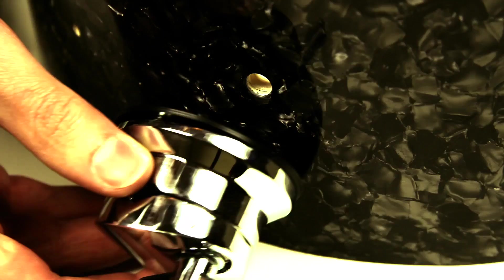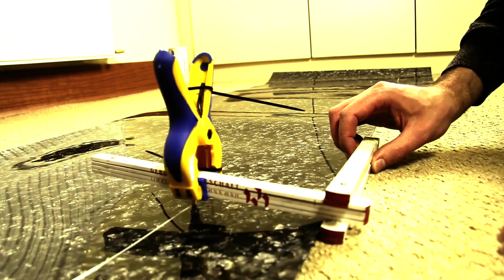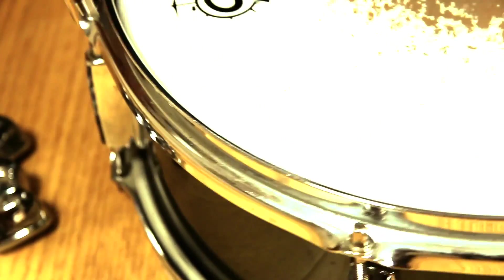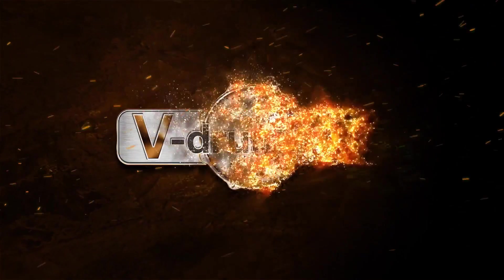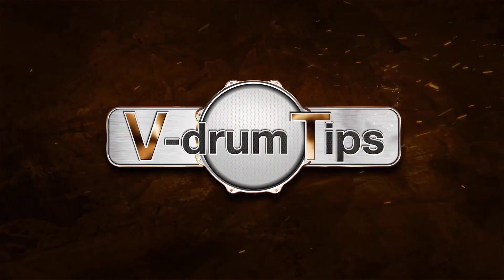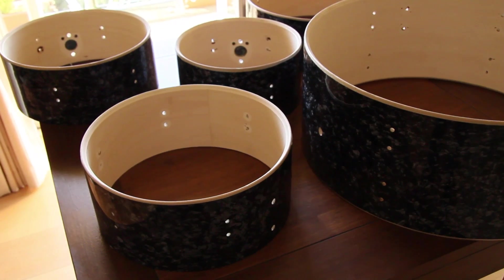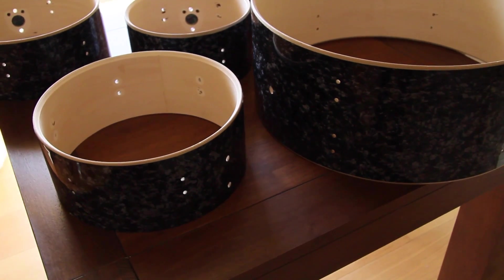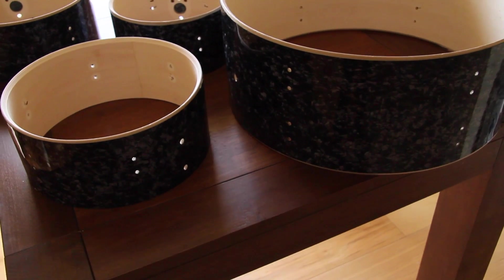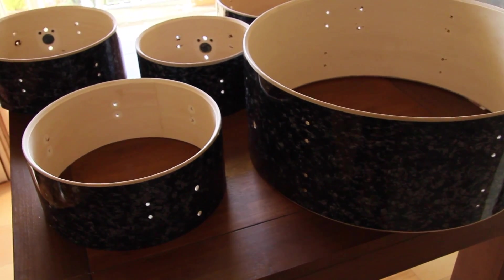Welcome to the Acoustic to E-Drums conversion series. This and the following videos are about the conversion process of a Pearl Rhythm Travel Up into an E-Drum kit. This episode is about building drum triggers. We will go for the cake pan method and apply aluminium discs to the shells.